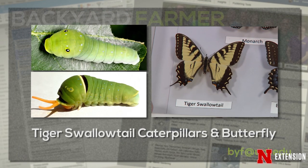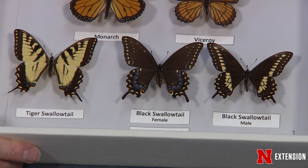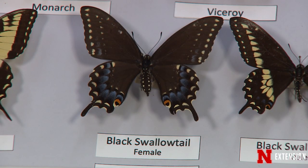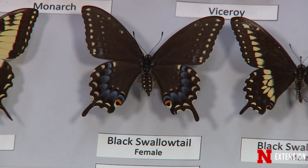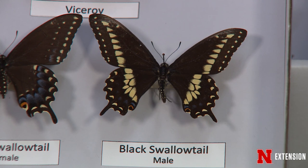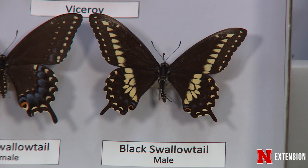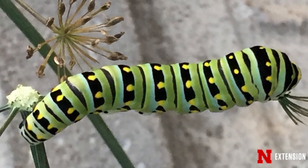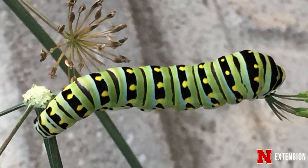That smelly organ is a defense mechanism because it smells awful. Same with the tiger swallowtail — it's really swollen, greenish, and has those eye spots on the front. When it's disturbed or picked up, out come those osmeterium, which is the name for those smelly orange organs. Black swallowtail caterpillars are found on plants in the carrot family — carrot, dill, anise, cilantro, those kinds of plants. They're a striped, spotted, yellowish, attractive caterpillar.